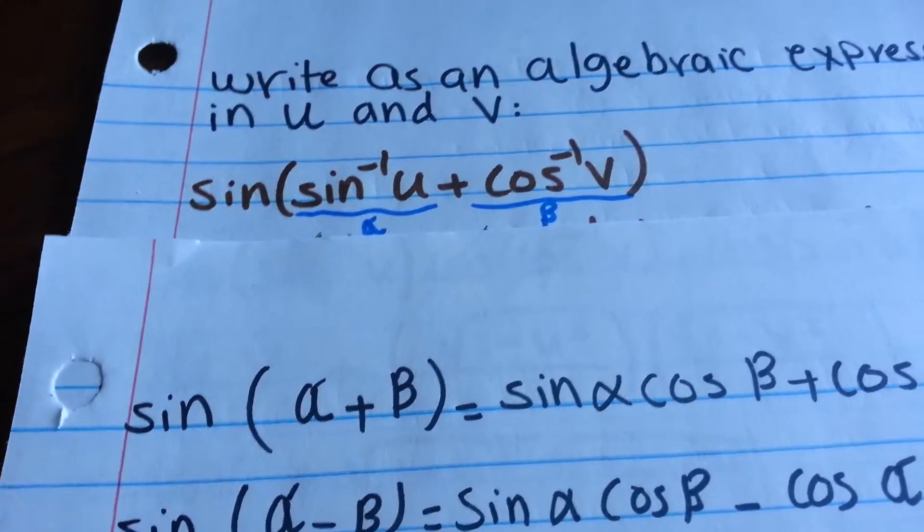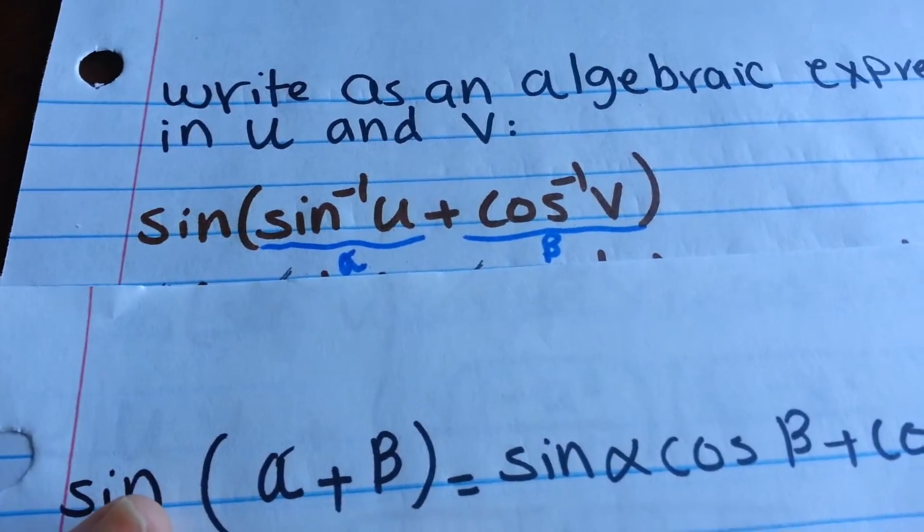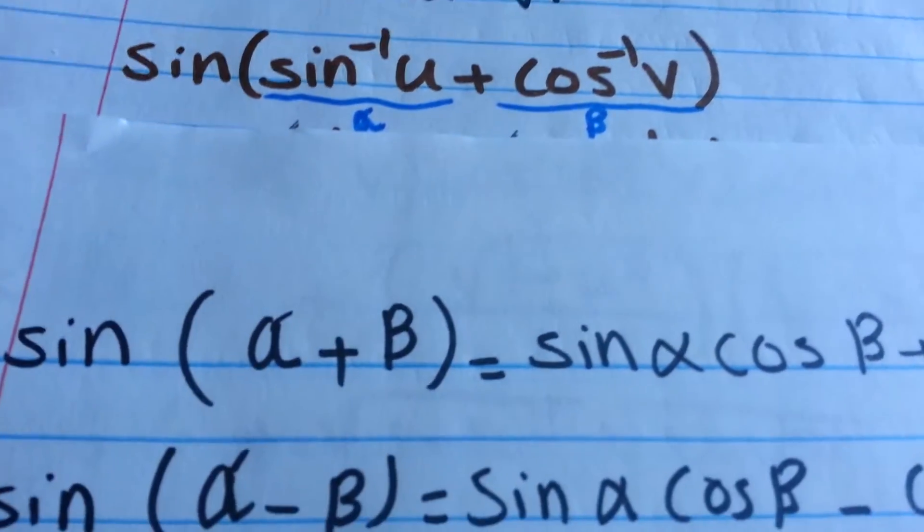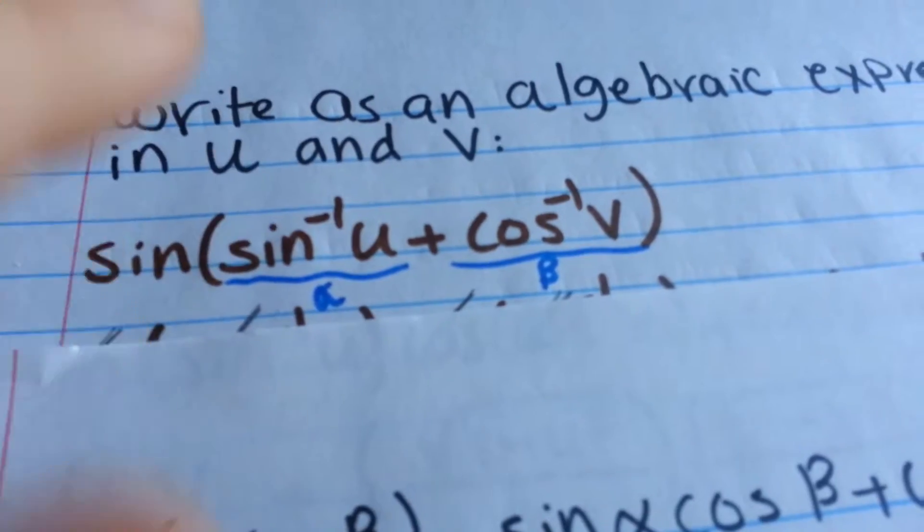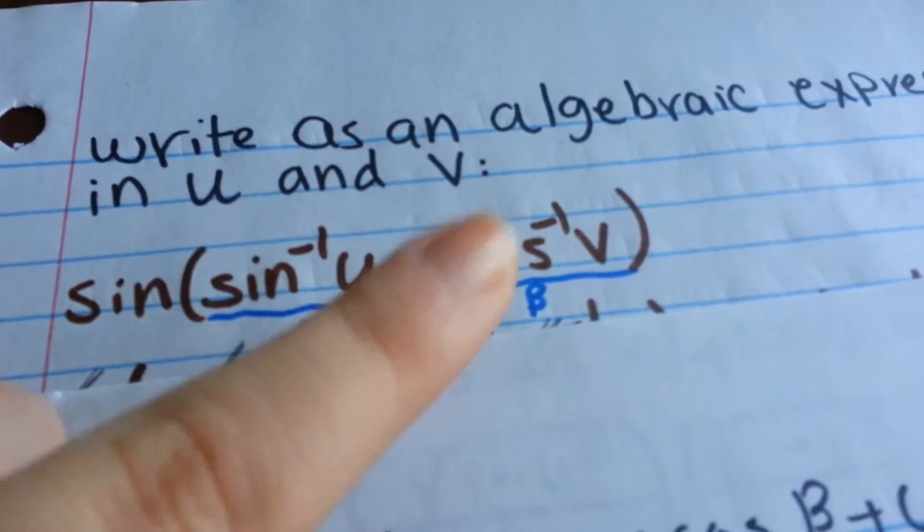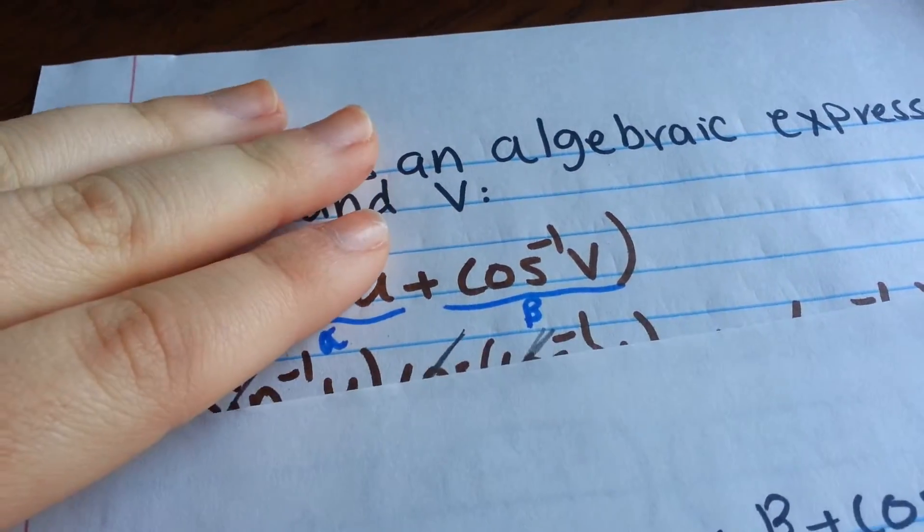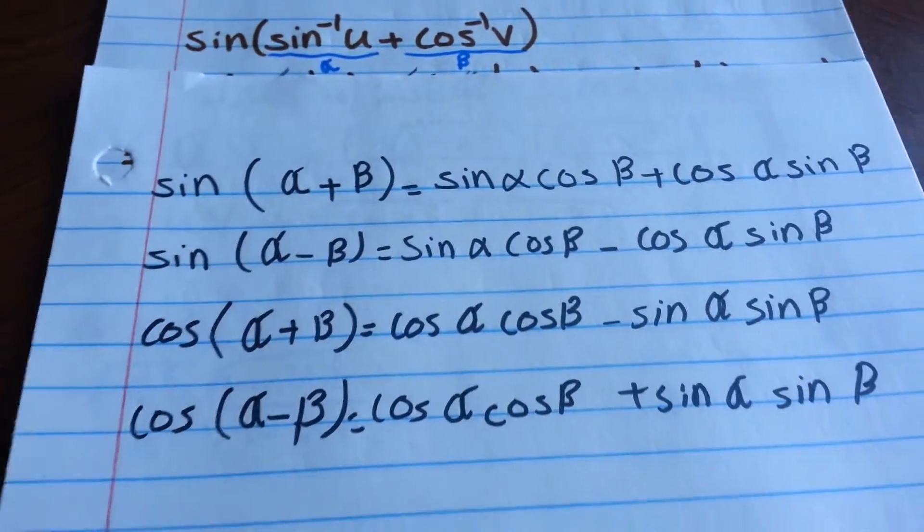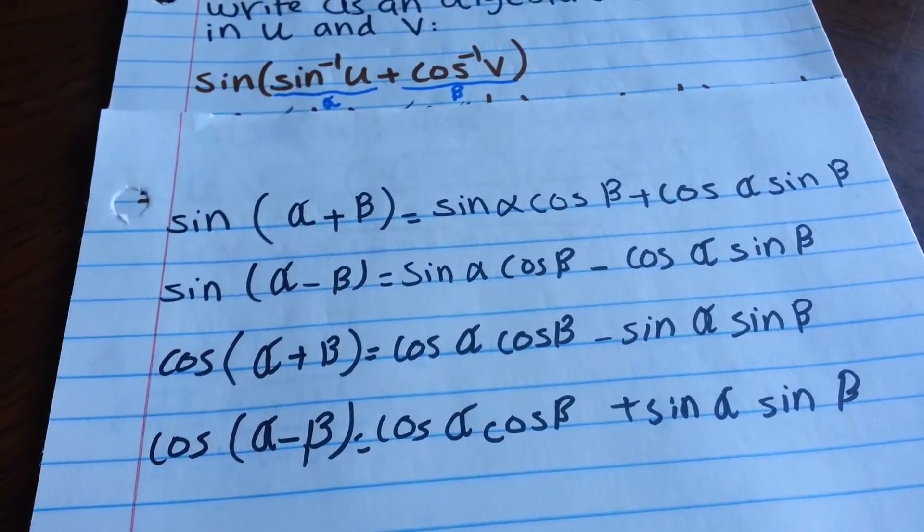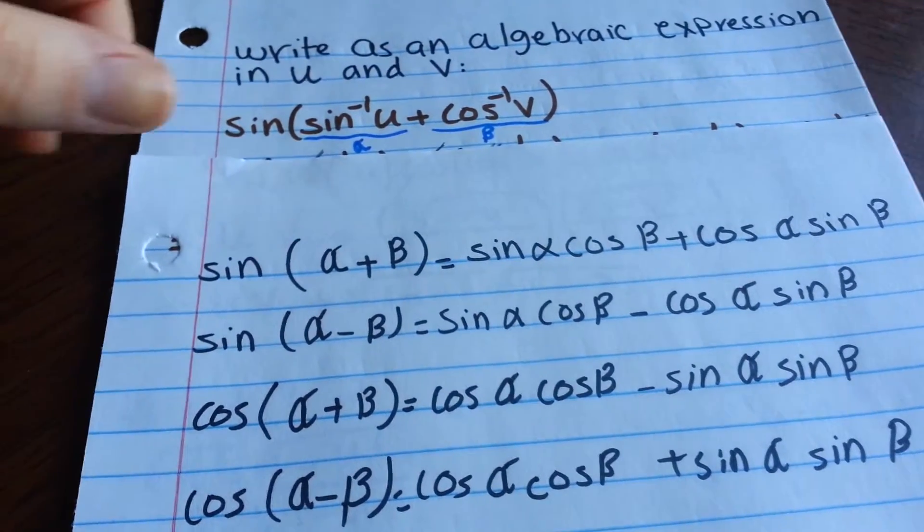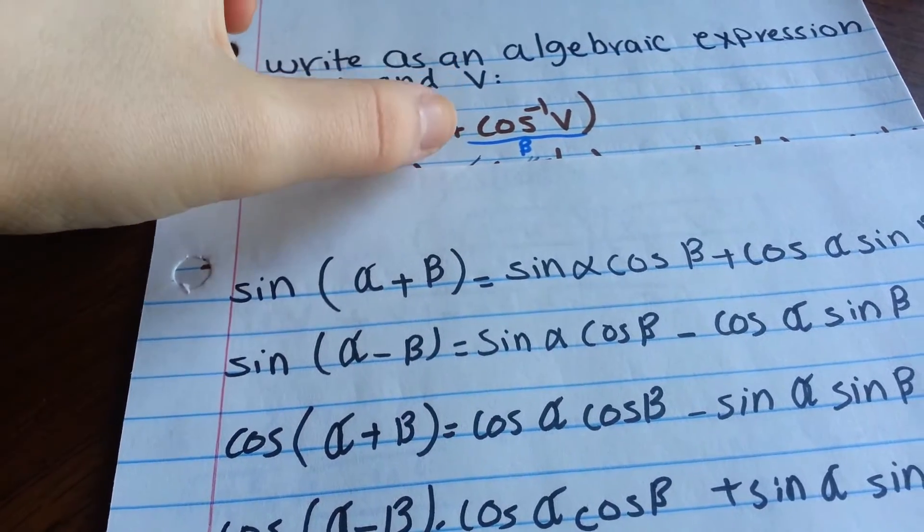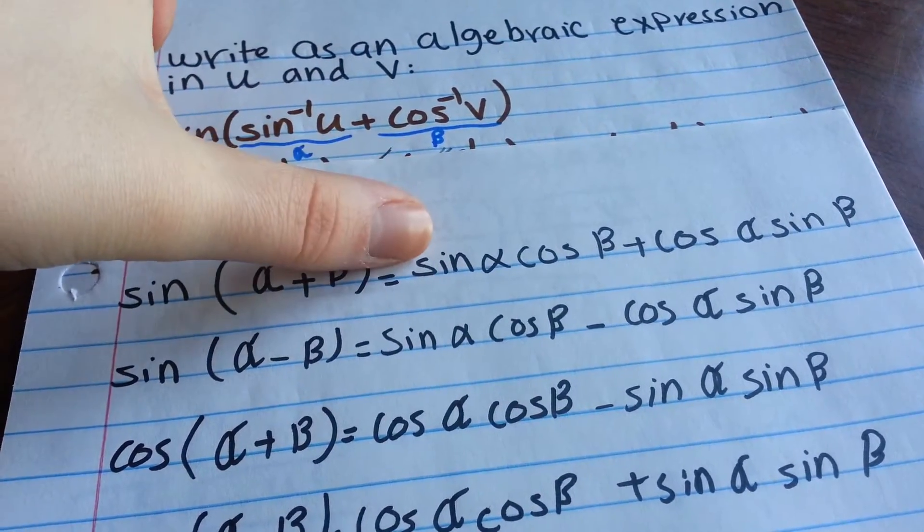First thing you want to do is label what is alpha and what is beta. So the first part right there is alpha plus beta. Now, before you do anything, look at your rules here. See which one of them is matching. The first one is matching because we have sine and we have plus in between, so we're going to use this.